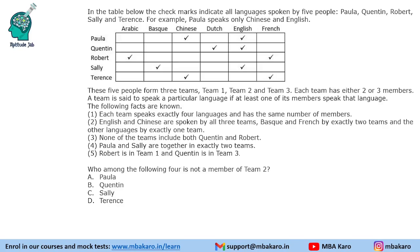Hello everyone, welcome to AptitudeJab. This set from CAT 2019 Slot 2 DILR says that there is a table given to us. It says all languages spoken by 5 people, you can call them PQRST. For example, Paula speaks only Chinese and English. So we are given the set of languages that these people speak.